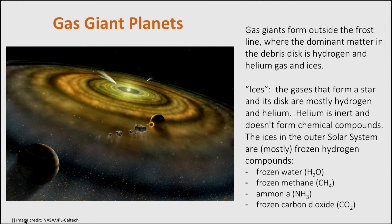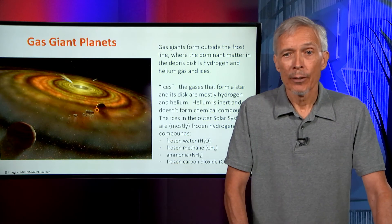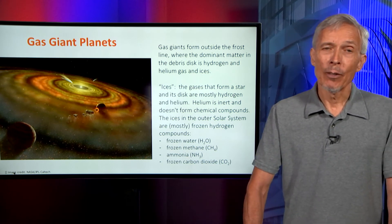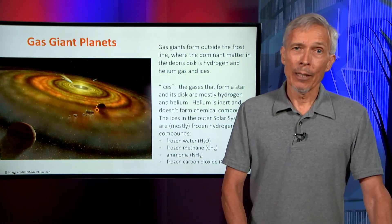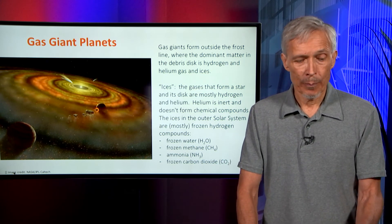The ices in the outer solar system are mostly frozen hydrogen compounds. Water, water vapor, and ice particles are the dominant one, but also frozen methane, ammonia, and frozen carbon dioxide — or dry ice. We see different amounts of these different ingredients in outer solar system bodies.